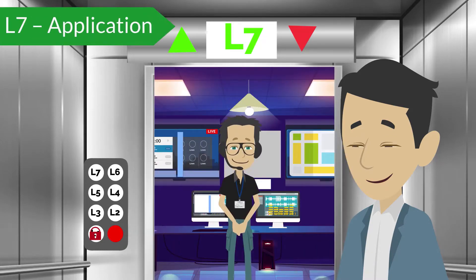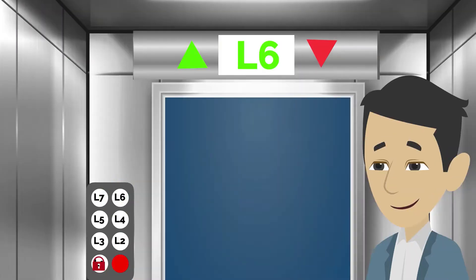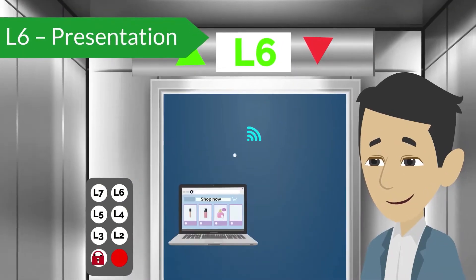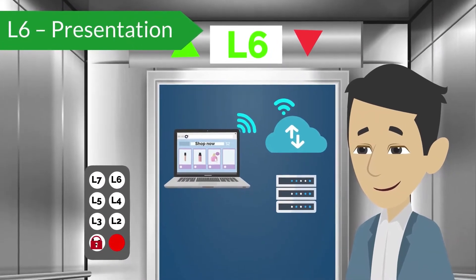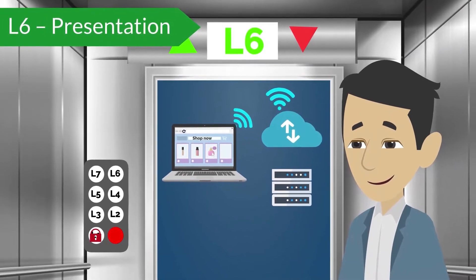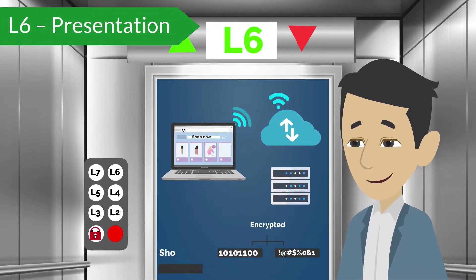Application layer — this is the layer at which applications are displayed to the end user. Presentation layer — in this layer, data is prepared for presentation between layers. For example, data that is encrypted across a network would be decrypted for presentation to an application at the destination.